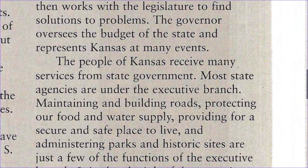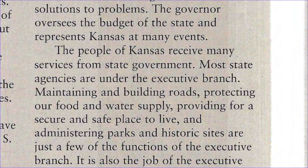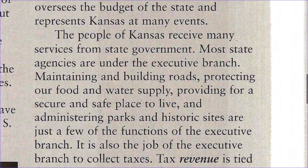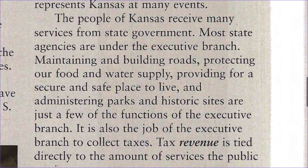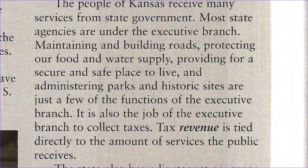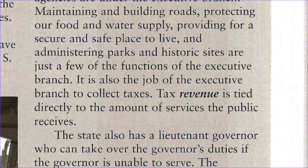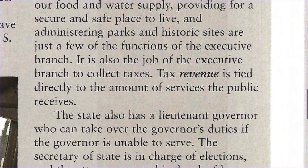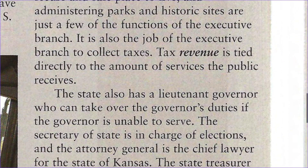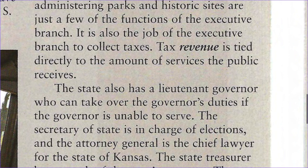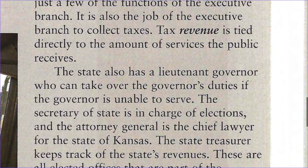The people of Kansas receive many services from state government. Most state agencies are under the executive branch. Maintaining and building roads, protecting our food and water supply, providing a secure and safe place to live, and administering parks and historic sites are just a few of the functions of the executive branch. It is also the job of the executive branch to collect taxes. Tax revenue is tied directly to the amount of services the public receives. The state also has a lieutenant governor who can take over the governor's duties if the governor is unable to serve.